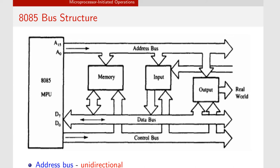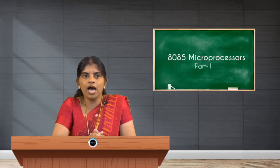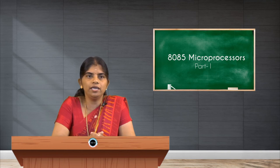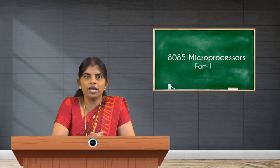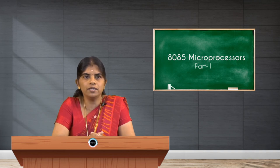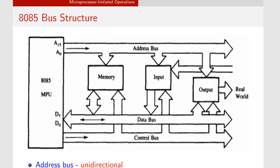In this diagram we can see the 8085 bus structure. The 8085 microprocessor is connected to memory, an input device, and an output device — and sometimes can be connected to the real world as well. The communication between all these is done using communication lines or groups of communication lines, known as buses. There are three different buses: the address bus, the data bus, and the control bus.